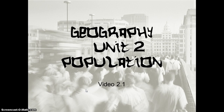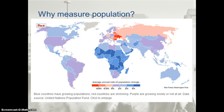Geography Unit 2 on Population, this is video 2.1. Why measure population? We study the population because it's critically important for three very specific reasons. More people are alive at this time — over 7 billion people — than any other point in Earth's long history. Second, the world's population has increased at a faster rate during the second half of the 20th century than ever before in history. Third, virtually all global population growth is concentrated in what we call LDCs, or least developed countries.